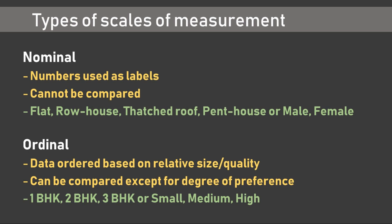Next is the ordinal scale, which orders data based on relative size or quality. Responses can be compared, except for the degree of preference, which is not part of the comparison. Examples include responses like small, medium, or high, or the size of a flat — one-bedroom hall kitchen, two-bedroom hall kitchen, or three-bedroom hall kitchen — which constitute ordinal data. You can order them in a particular way, however there is no numerical representation for each of them.